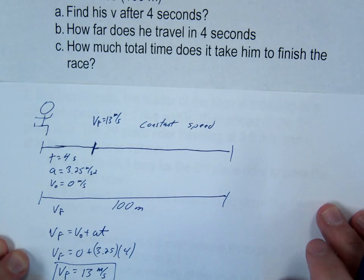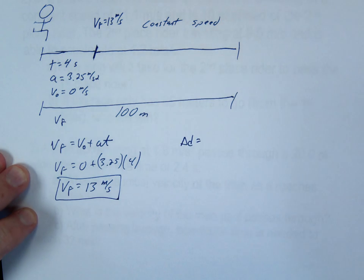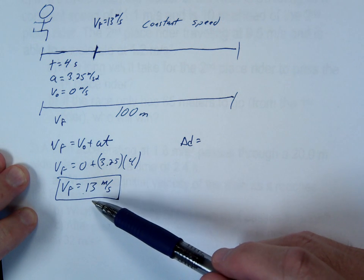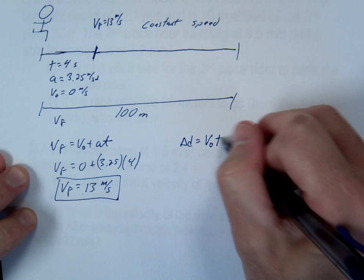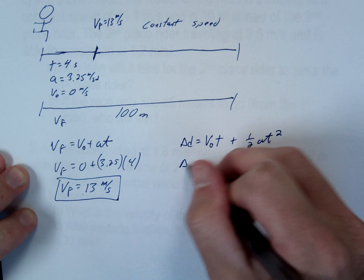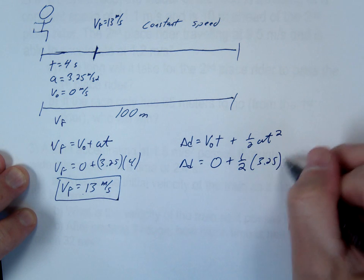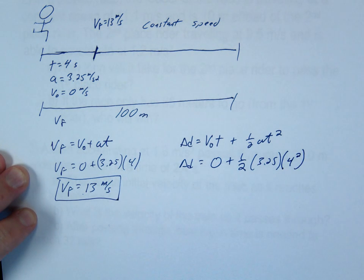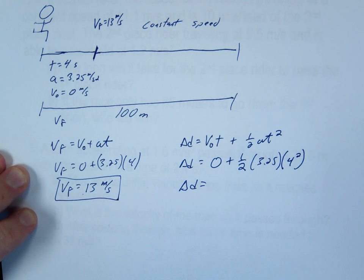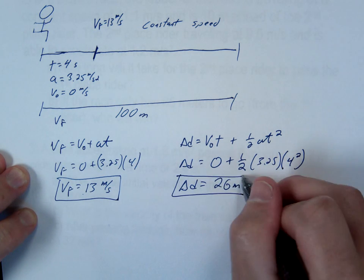The second question: how far does he travel in four seconds? That's our displacement. We want to use the displacement equation without V final, just in case we made a mistake. That is Δd equals V₀t plus 1/2 at². Substitute in: Δd equals 0 plus 1/2 times 3.25 times 4 squared. D equals 26.